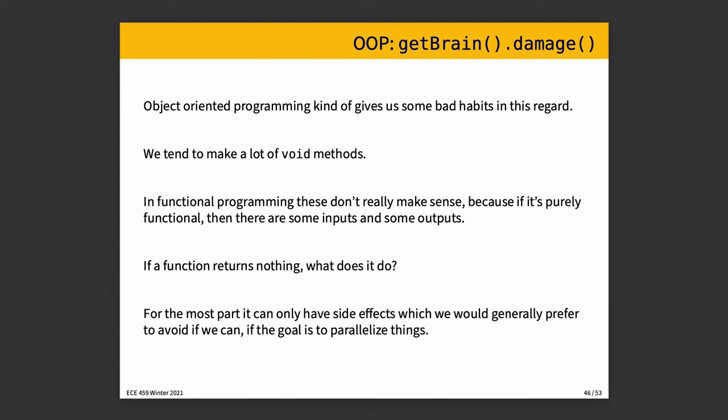In a functional style, you need a computation result, you have to wait, but you are trying to write your code like a mathematical function, so like f of x, y, and z produces a result a, b, and c. But we don't do that in a lot of object-oriented programming. We make a lot of void methods, and in functional programming it doesn't work because, well, there's inputs and there's outputs, and if a function returns nothing, what does it do?